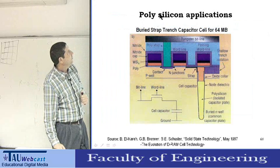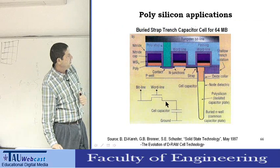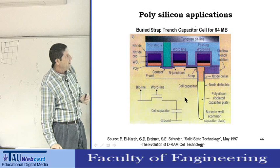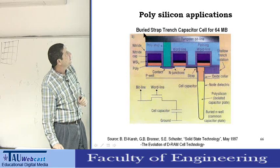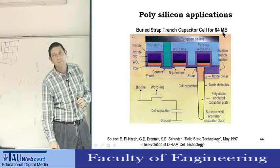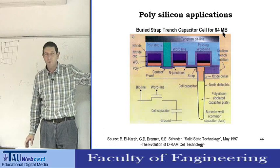Polysilicon applications: for example, this is a cross-section of a memory — a buried strap trench capacitor for a 64-megabit DRAM.